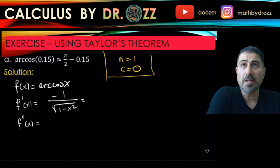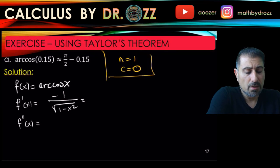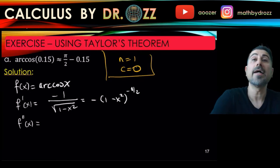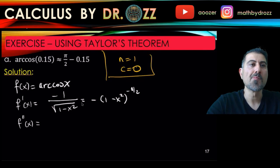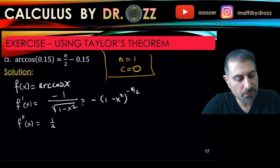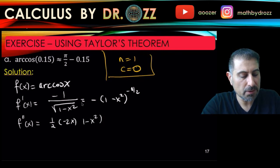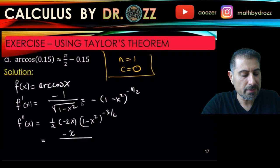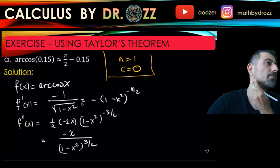And for finding f double prime, you need the quotient rule. In fact, if you want to avoid the quotient rule, do this. So write this term as (1 minus x squared) to the power of negative 1/2. Now we can use the power rule for differentiation. So this is 1/2 times negative 2x times (1 minus x squared) to the negative 3/2.